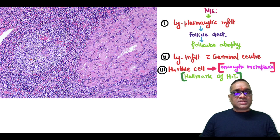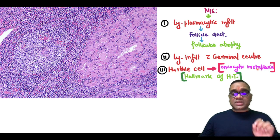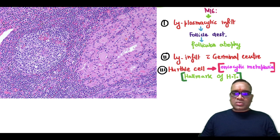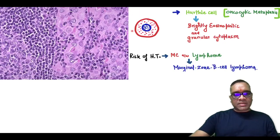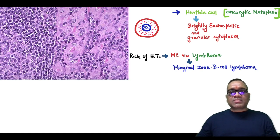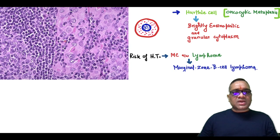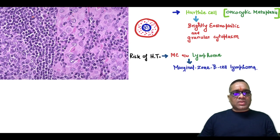You can notice the germinal center, and Hürthle cell or oncocytic metaplasia, which is the hallmark of Hashimoto thyroiditis. Hürthle cells have brightly eosinophilic and granular cytoplasm. You can see these brightly eosinophilic cells with granular cytoplasm clearly in both low and high power views, along with the lymphocytic infiltrate.